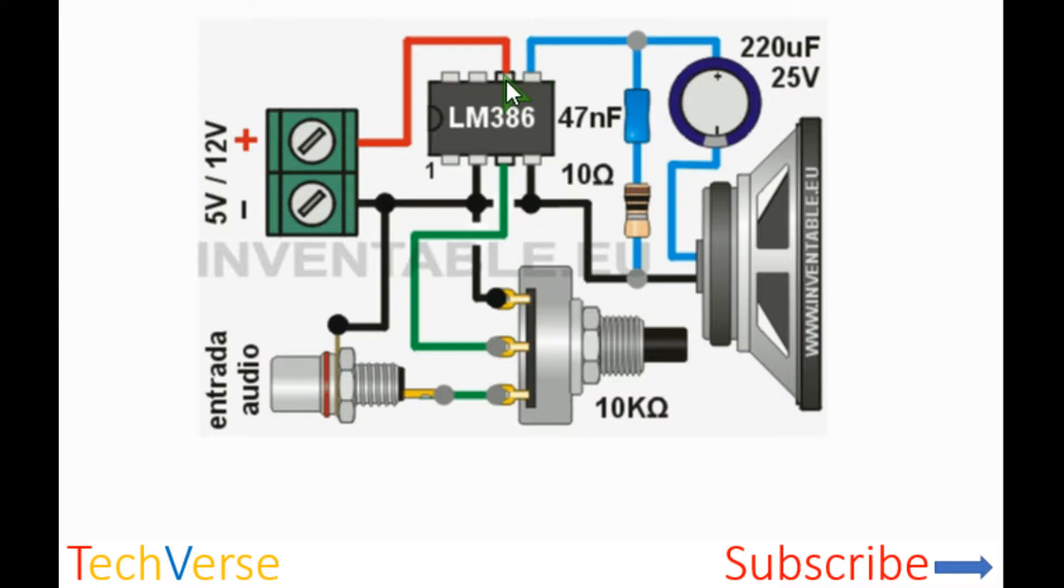So pin 6 is the positive for the amplifier. Pin 2 is the ground.